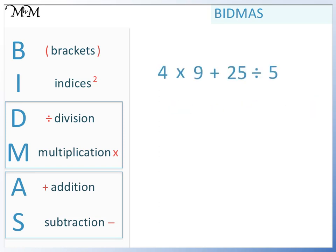Here's our final example. There are no brackets. No indices. But we do have a division. We also have a multiplication. Because division and multiplication are equally important, we work from left to right.